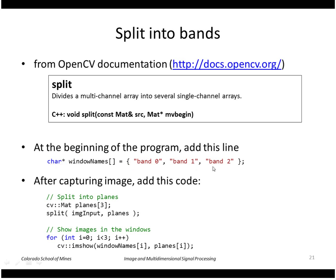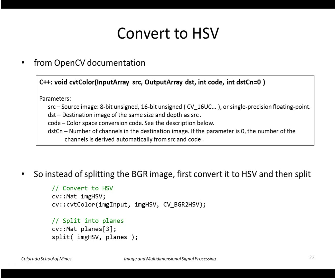Next I convert to HSV and display those bands instead of the RGB bands. I use OpenCV's cvtColor function, which takes the RGB image and creates a new image called img_hsv. The mode used is BGR2HSV, because the default way OpenCV captures color images is blue-green-red, not red-green-blue.